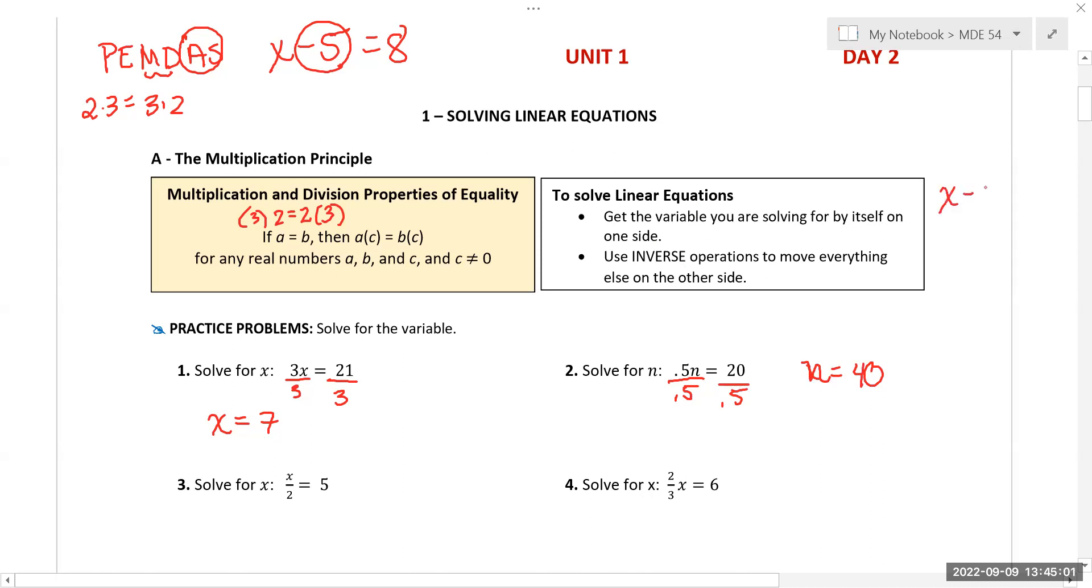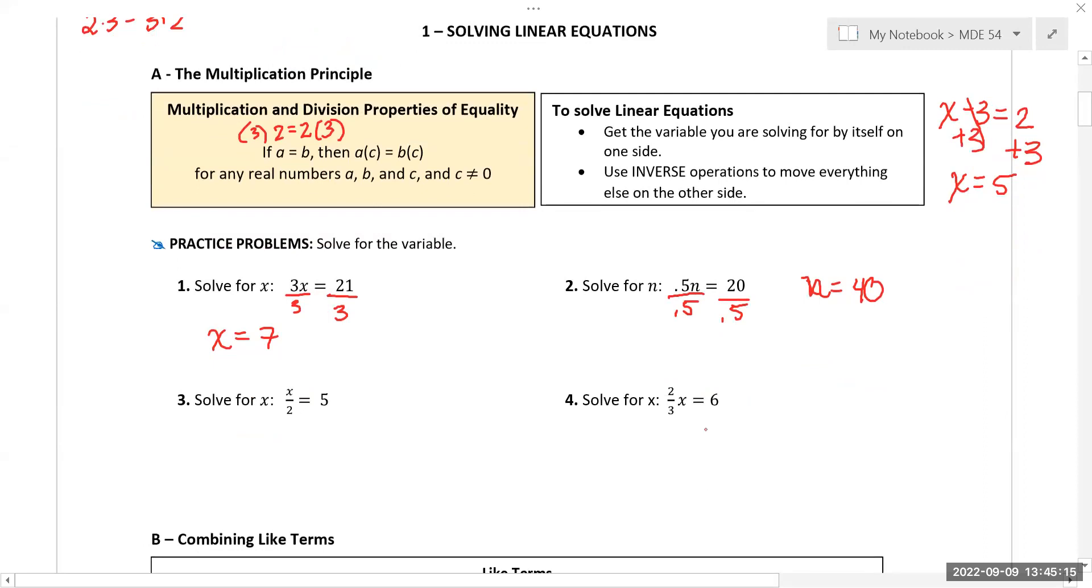So again, inverse. If I have x minus three equals two, I can undo it by adding to both sides and get x equals five. For number four, that's 2x divided by three equals six. If I multiply by the reciprocal here, then the threes cancel, the twos cancel, and I end up with x equals nine. This one is x divided by two equals five. Multiply by two, and that gives me x equals ten.